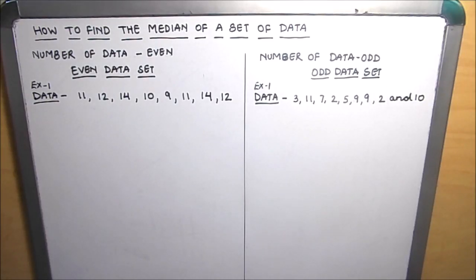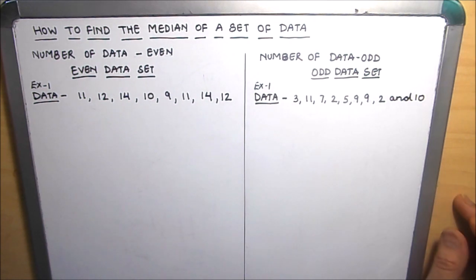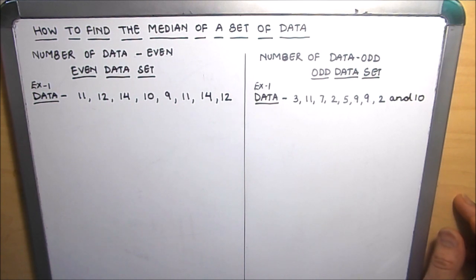Hello everyone, today we are going to learn how to find the median of a set of data. When finding the median, there are two cases: the first one is when the number of terms in the data set is even, and the second one is when the number of terms is odd.